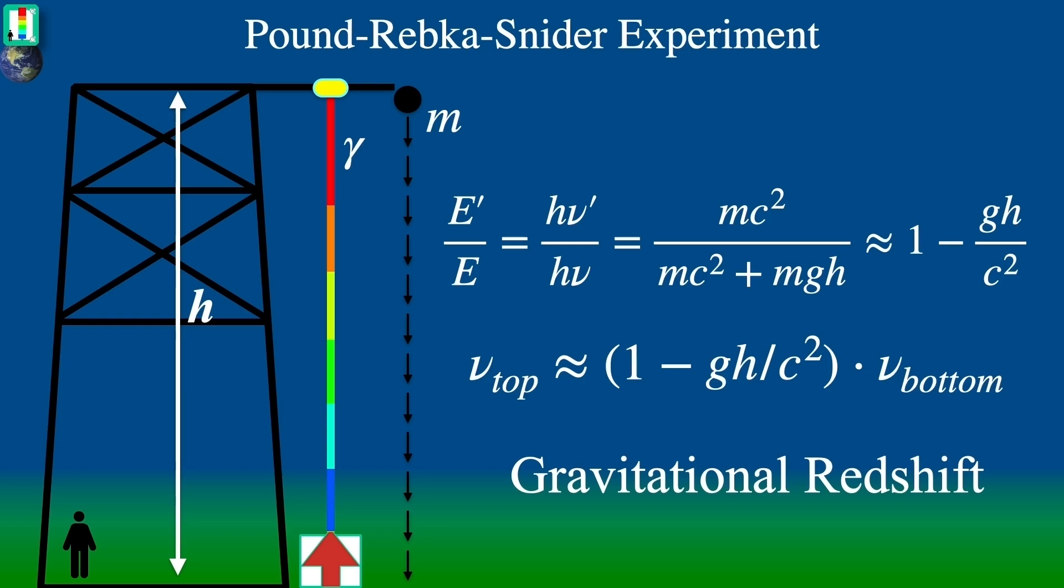Here we see that the formula shows how small that shift should be, 9.8 meters per second squared times 22.6 meters divided by 3 times 10 to the 8th meters per second squared, which is on the order of 10 to the minus 15th.